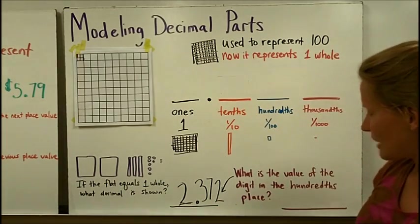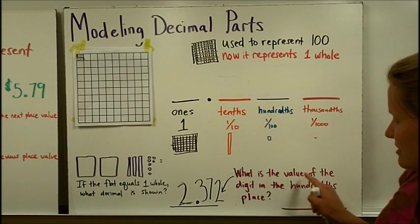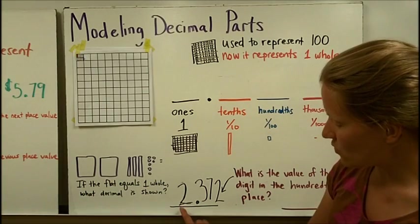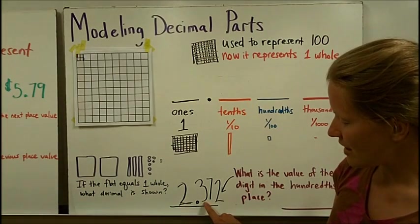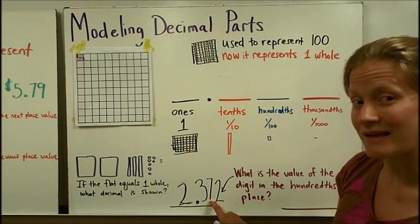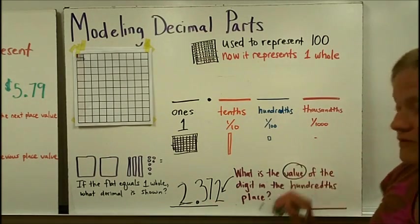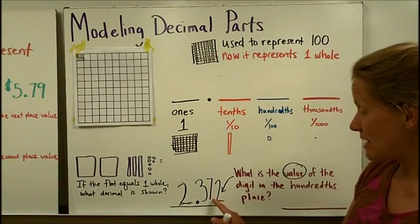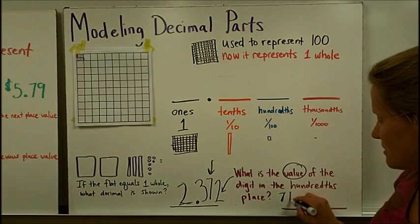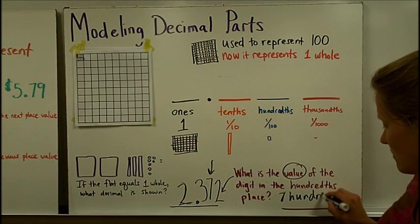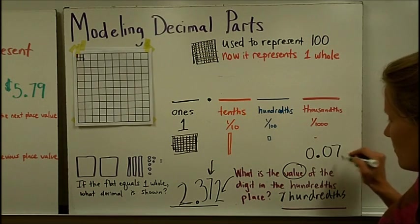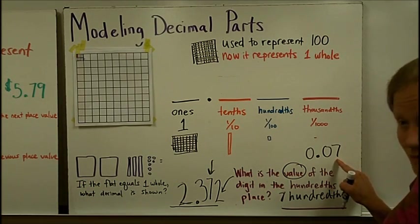And then, a follow-up question, what's the value of the digit in the hundredths place? So the place value, here's the ones place, right after that, right after the decimal is the tenths place, here's the hundredths place. Now it's not asking what is the digit, it's asking the value of the digit. That's how much that seven is worth. So that seven is worth seven hundredths, or we would write seven hundredths like this, with a seven in the hundredths place.